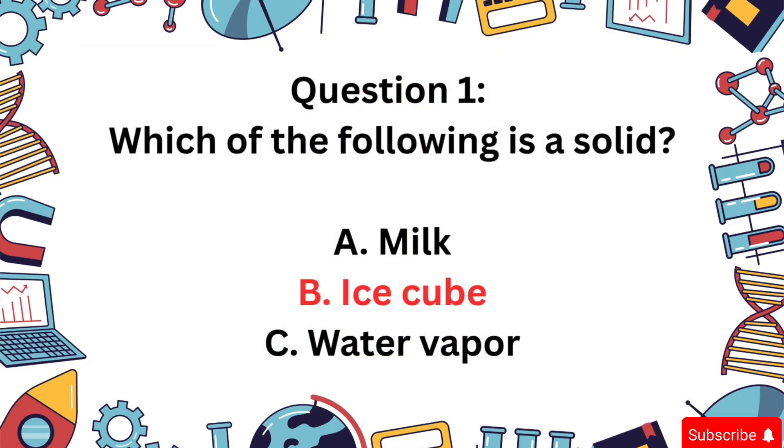Question 1: Which of the following is a solid? Is it A) Milk, B) Ice cube, or C) Water vapor? The correct answer is B, ice cube. Solids have a definite shape and volume, and ice is frozen water, solid and sturdy.